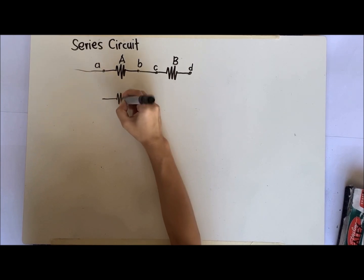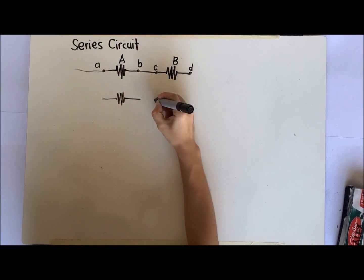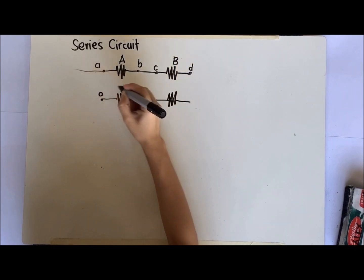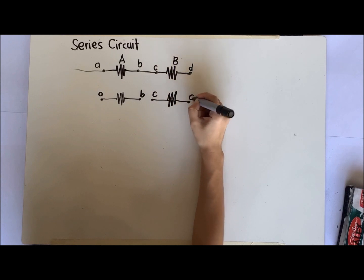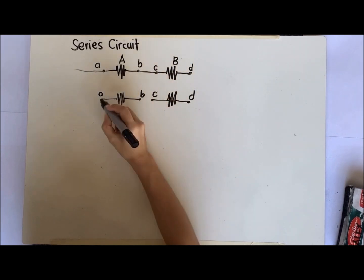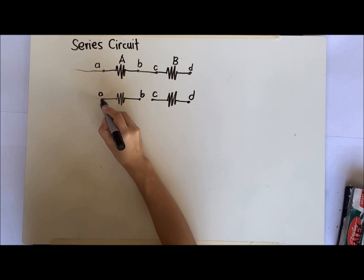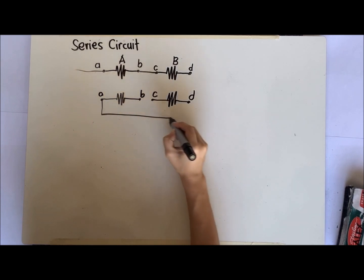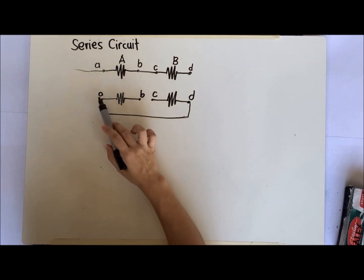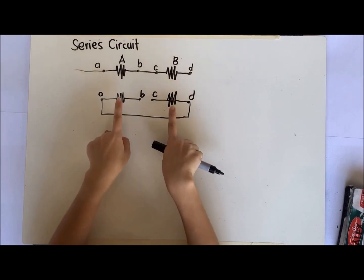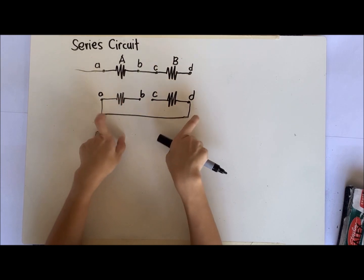For example, let's bring back resistor A and resistor B. This is again terminal A, terminal B, terminal C, terminal D. If we have a long wire that connects terminal A to D, the connection is still series because only one terminal of each resistor is connected together.